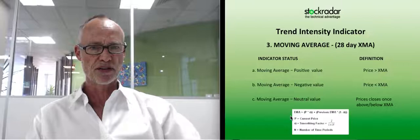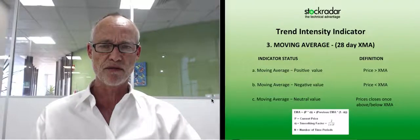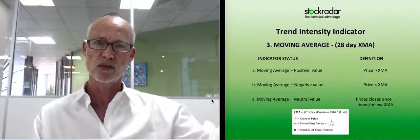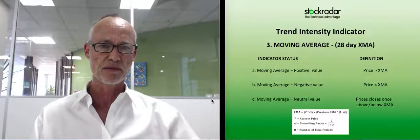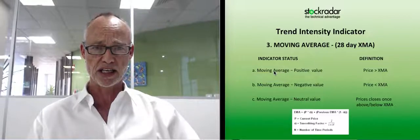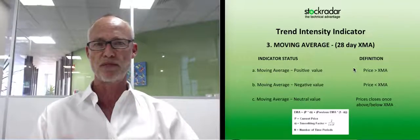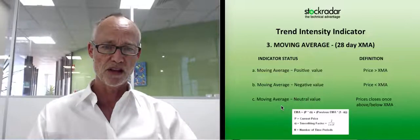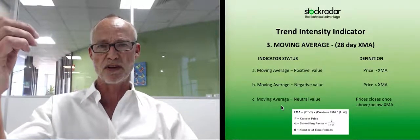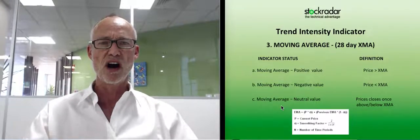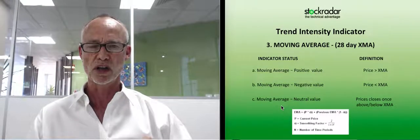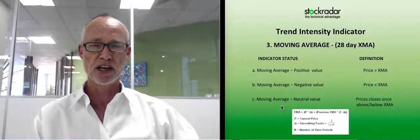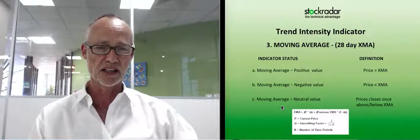Now, the moving averages. I use a 28-day exponential moving average. I use an exponential moving average primarily because it weights the data more heavily towards the latest data than the earliest data. The indicator gives a positive value if the price is above the moving average, and a negative value if it's below. There's a little grey area: if it's only closed once above or once below the average, I give that a neutral value. I like to see two closes above or two below to get a bit more confirmation — working those probabilities again.